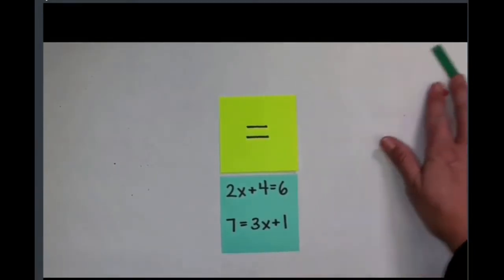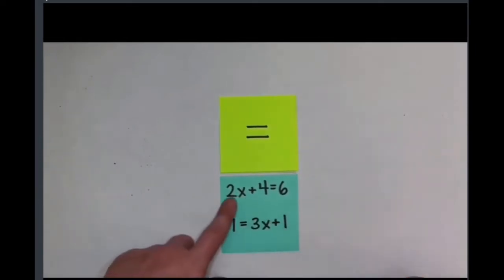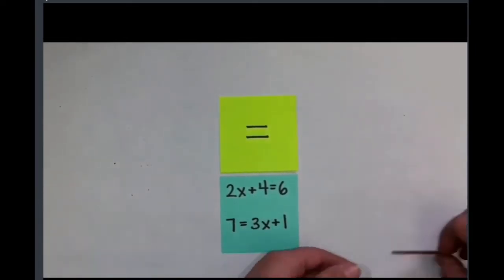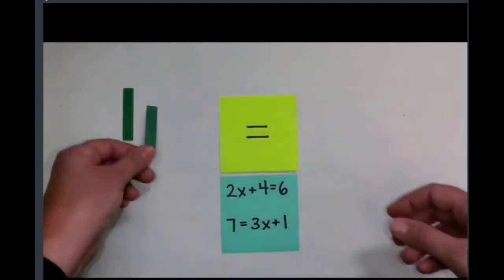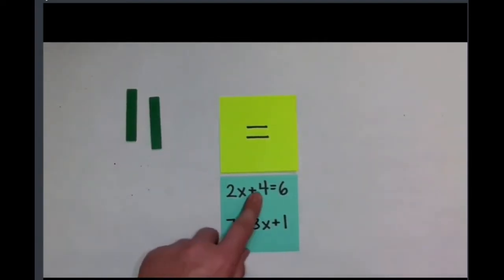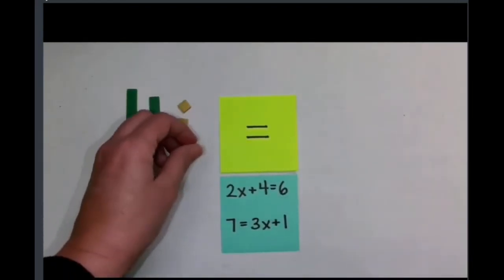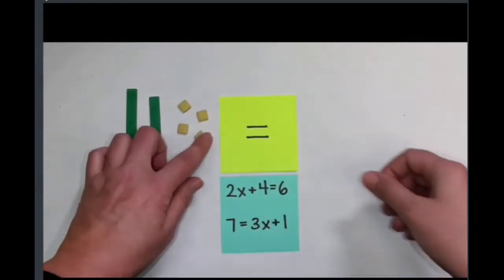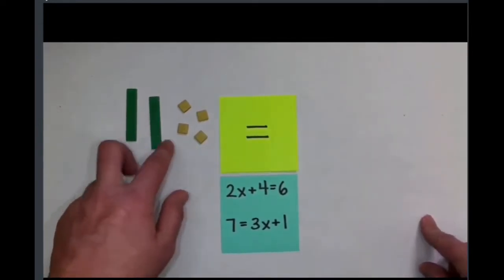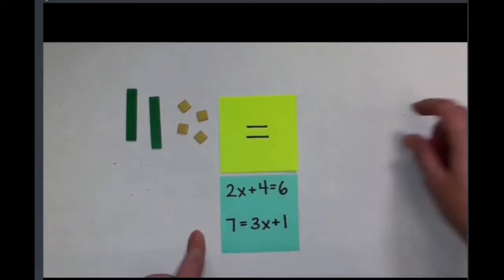Let's go ahead and get this problem set up. I have two sets of X and those X are positive, so I'm going to bring in two rods just like this. And to that we are adding four, that four is positive, so I'll bring in four units just like that. So I can see I have 2X plus 4.